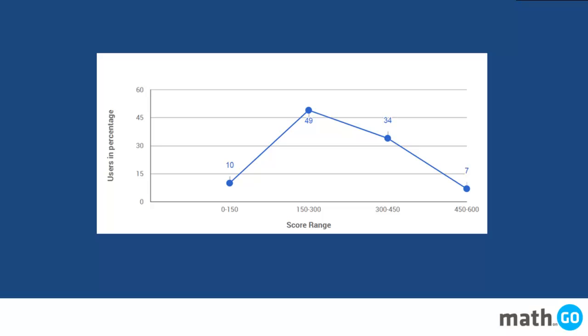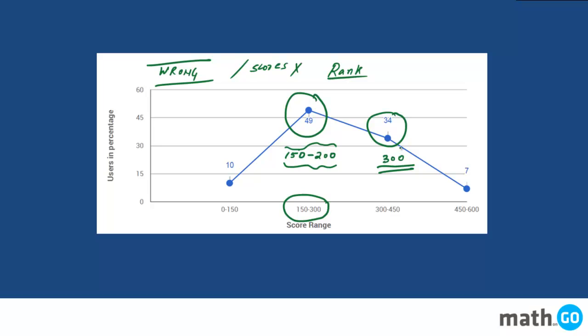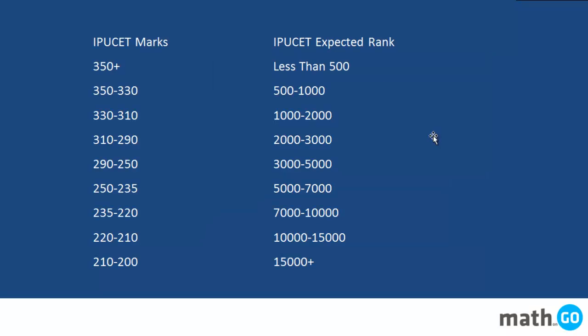If you talk about the score range of IP examinations, majority - 49% of students - score between 150 to 300. Most of them will be around the bracket of 150 to 200, which is the general score we hear about. Only 34% are able to cross the 300 mark. This calculation might be wrong because IP does not give you the scores - it only gives you ranks.